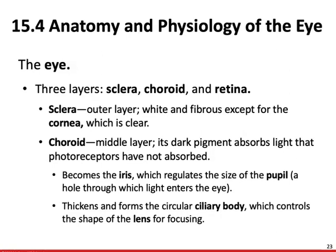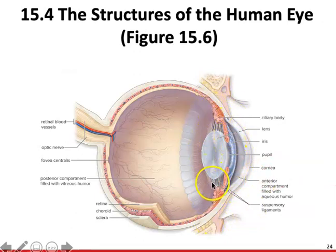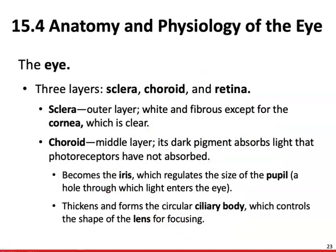The ciliary body is going to be a ring of muscle tissue that encircles the lens. It helps hold the lens in place and also adjusts for focus. Here is our ciliary body — this muscle right here holding the lens. The lens allows us to focus on images at varying distances, whether closer or farther away. The lens is very important and the ability to adjust that lens becomes important.